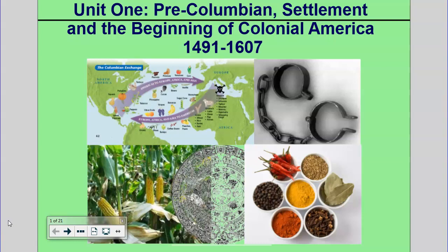Today we're in Unit 1: Pre-Columbian Societies, Settlement of the Americas, and the beginning of colonial America, 1491–1607. That's where the majority of the information we're going to talk about falls. You'll see some stuff comes before that, and a couple little things come after. That's the center of our discussion — the big unit title.